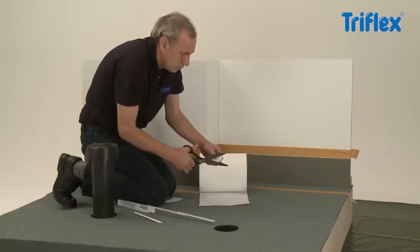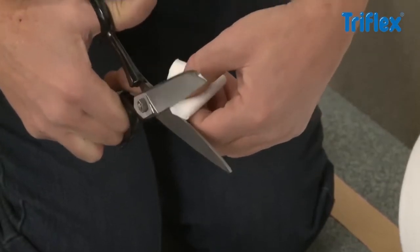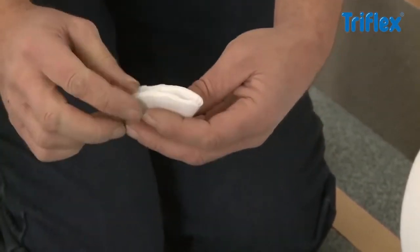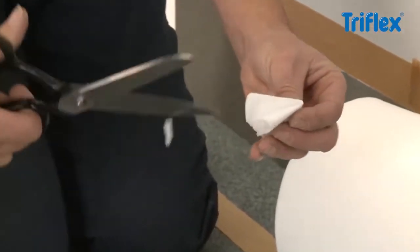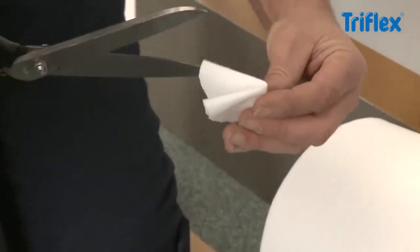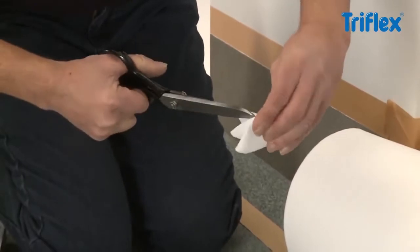Remember to prepare all fleece cutouts before mixing the waterproofing resin. Circular fleece cutouts, approximately 10 cm in diameter, are cut to line all inner and outer corners. Make an incision through to the center.